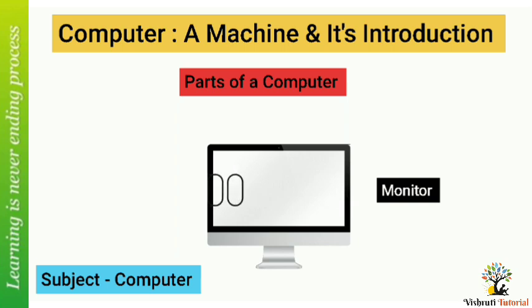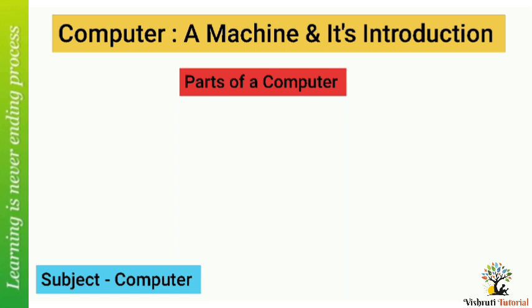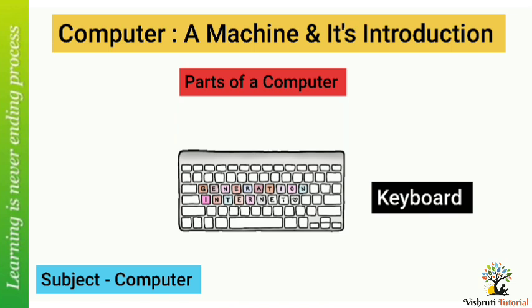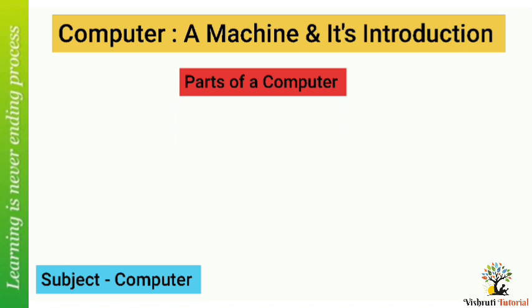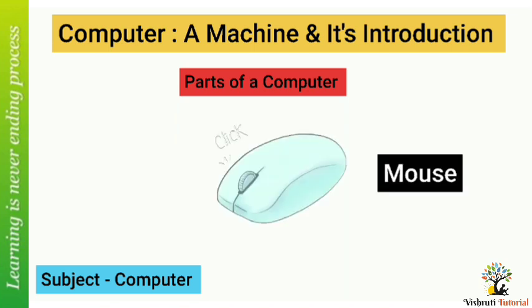Another part of a computer is the keyboard. It has many keys on it. Each key has a mark on it, like an alphabet, a number, or a symbol.